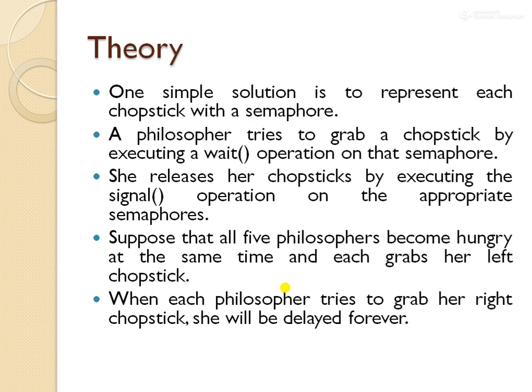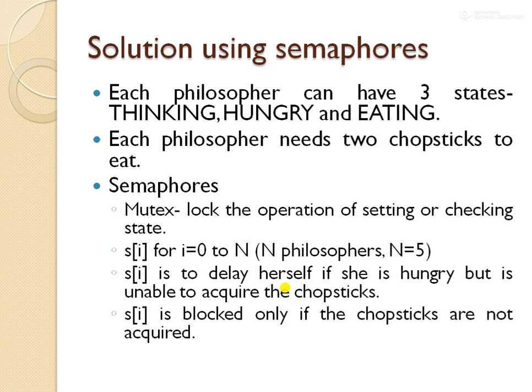The simple semaphore solution causes deadlock, so we need another solution. We can use other synchronization tools like monitors, but we will use semaphore itself with a modified solution that avoids deadlock. In this new solution, each philosopher has three states: thinking, hungry, and eating, and still requires two chopsticks to eat.